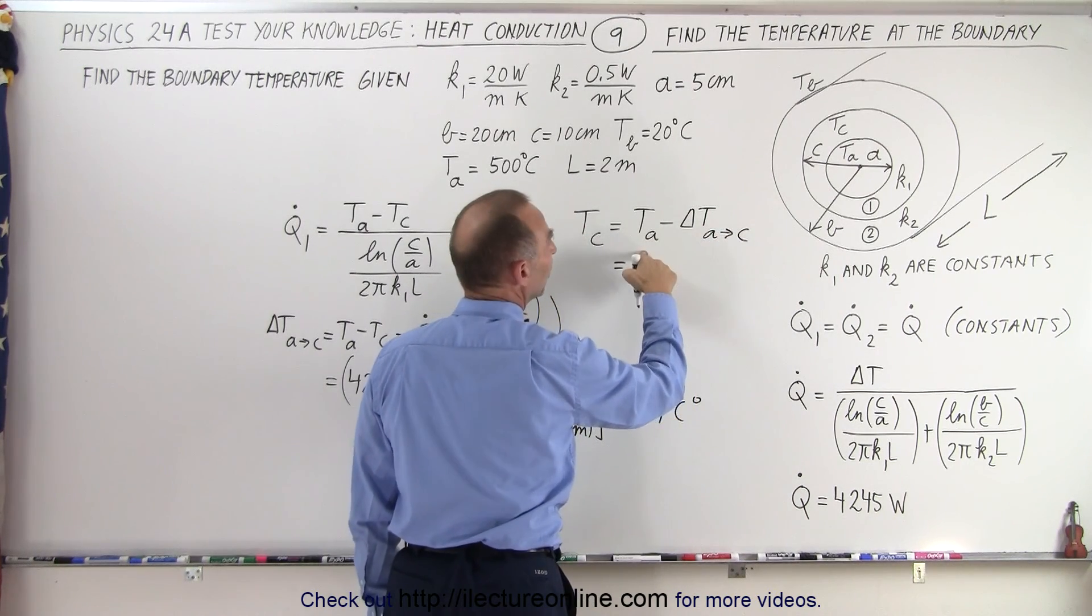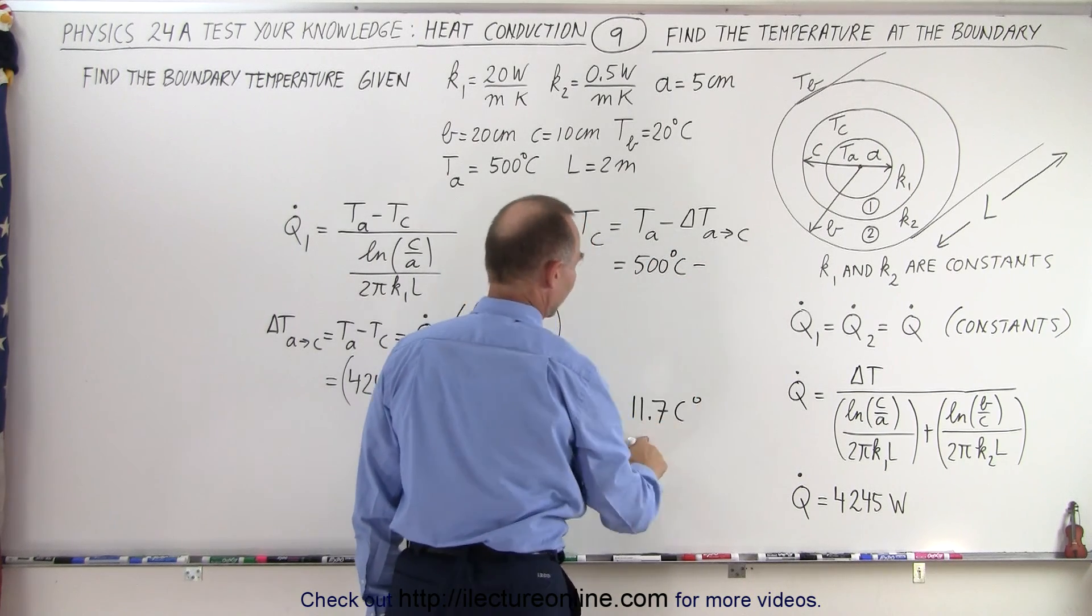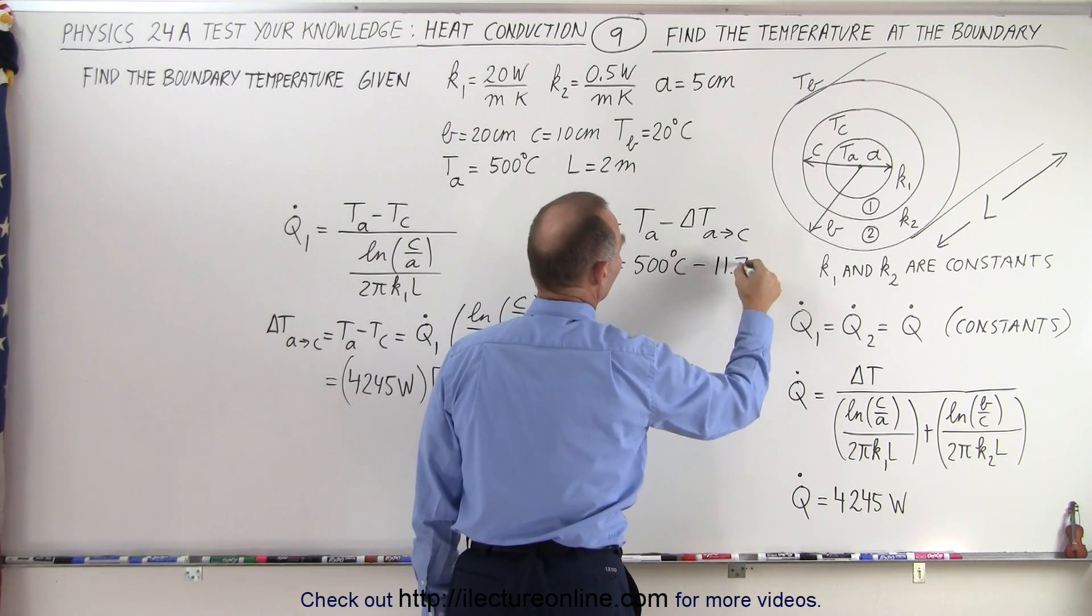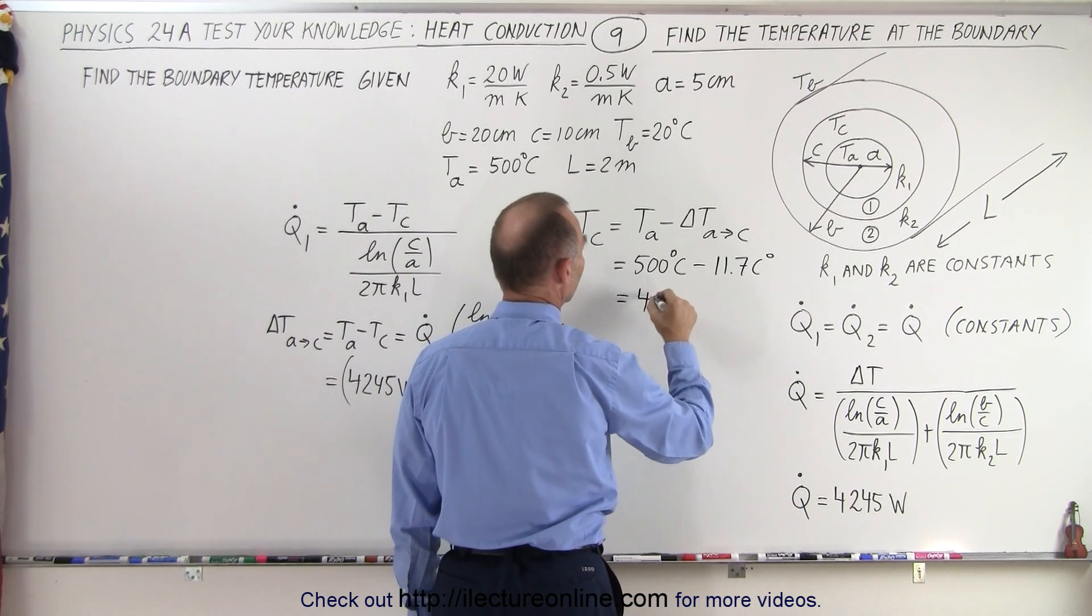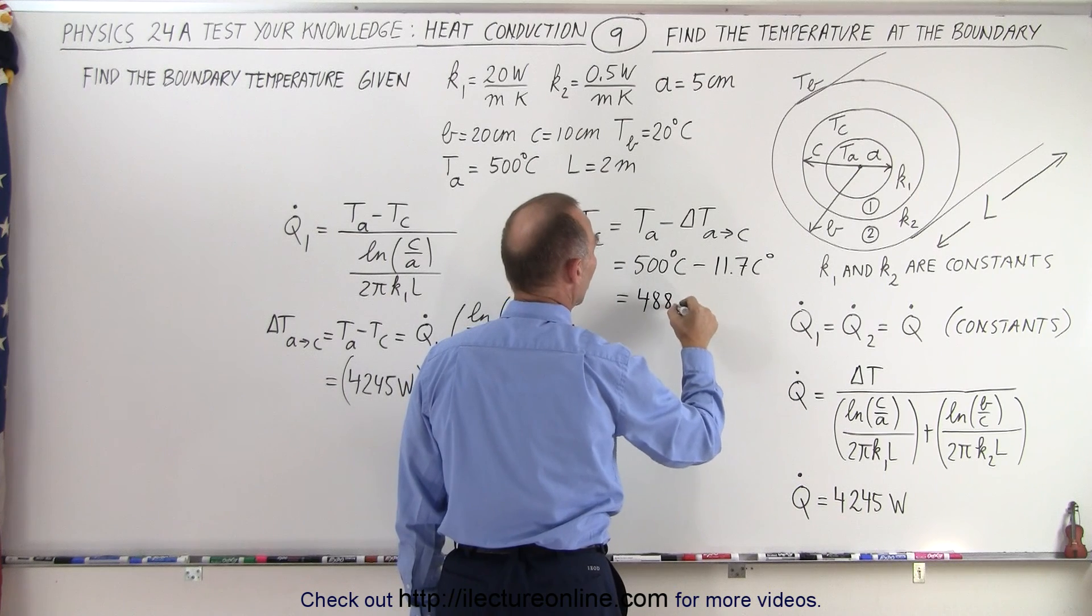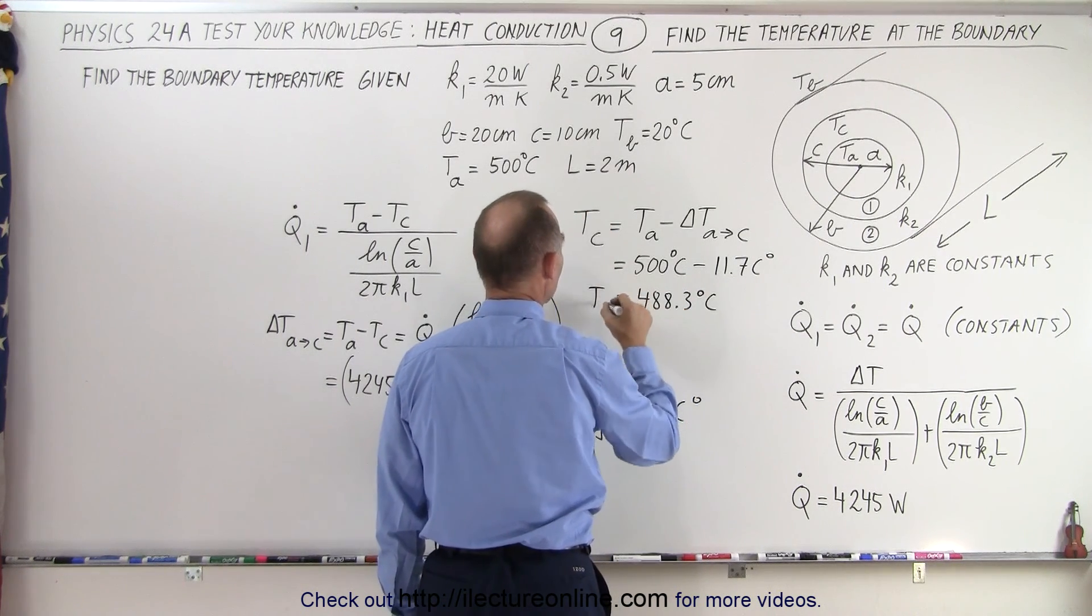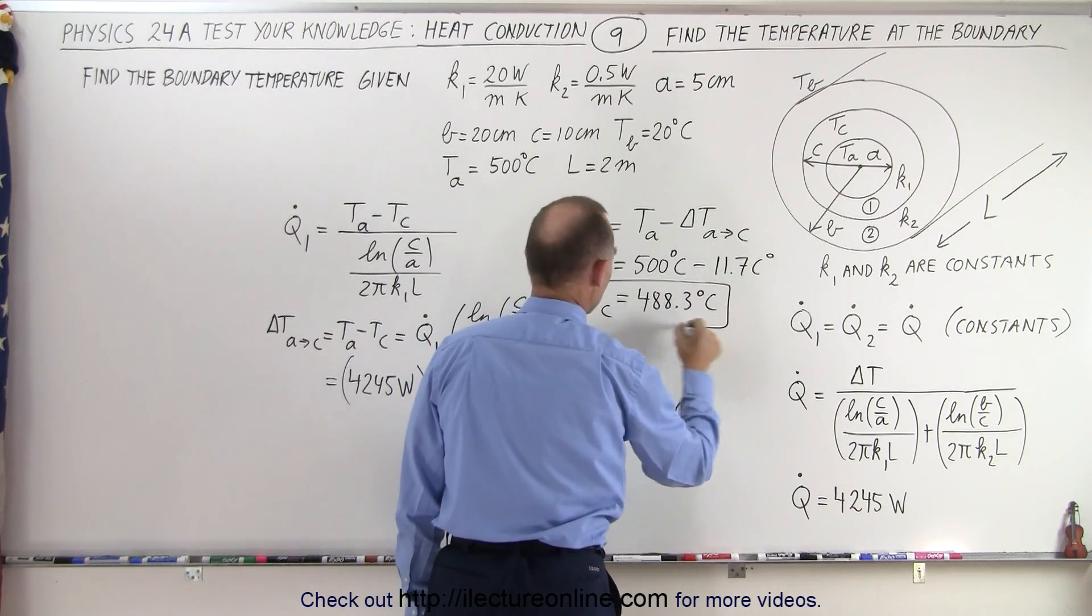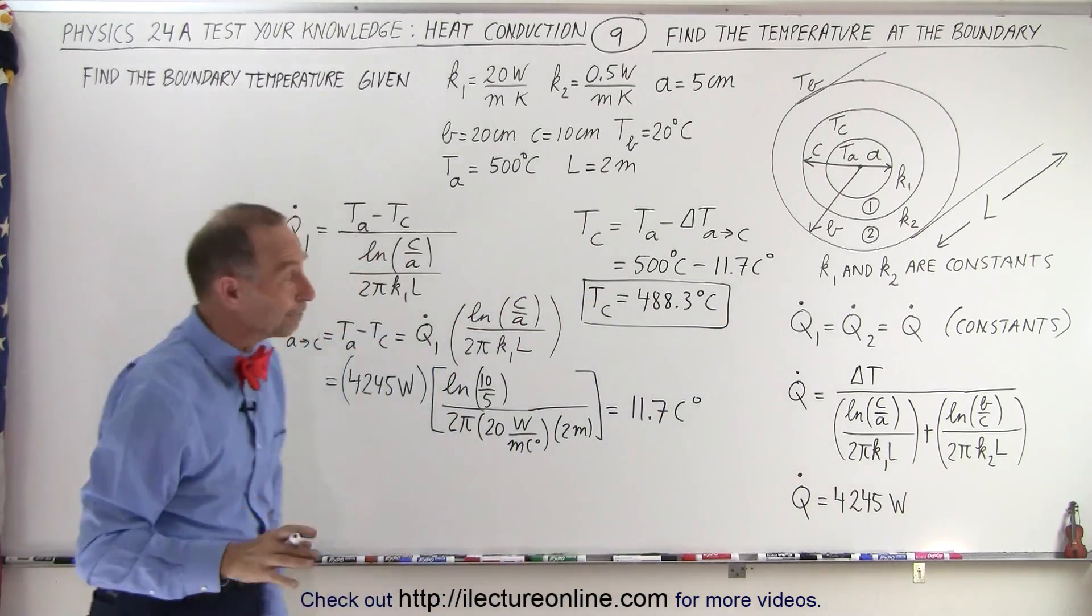And so since the inside temperature was 500 degrees centigrade, and subtract from that 11.7 centigrade degrees, that means that the temperature at the boundary must be 488.3 degrees centigrade, so that would be T_C. Let's see here, if I add that, 11, yes, that would be correct. All right.